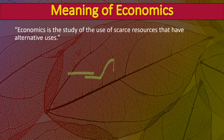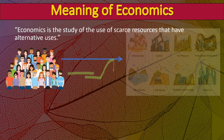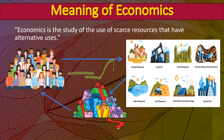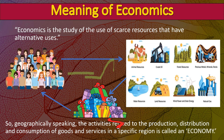What do we mean by this? Basically, there are people and people need resources to fulfill their desires. These resources are limited but the desires are unlimited, so people need to make choices as to how to fulfill their unlimited desires. Geographically speaking, the activities related to the production, distribution, and consumption of goods and services in a specific region is called an economy.